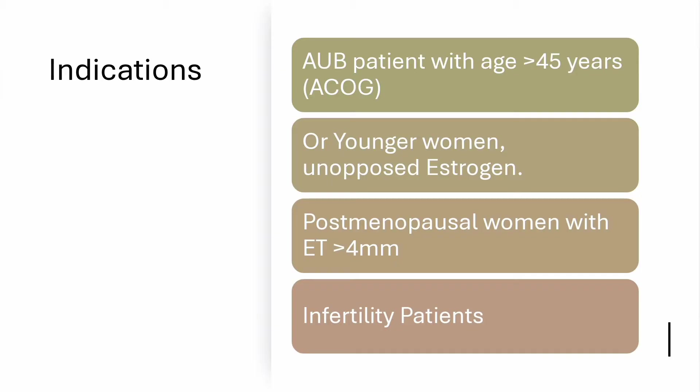This is an office or OPD procedure that can be done mainly in an infertile patient or AUB patient, abnormal uterine bleeding patient with age more than 45 years, or even a younger woman that has unopposed estrogen exposure such as PCOS and obese patients, and postmenopausal women with endometrial thickness on TVS more than 4 mm.